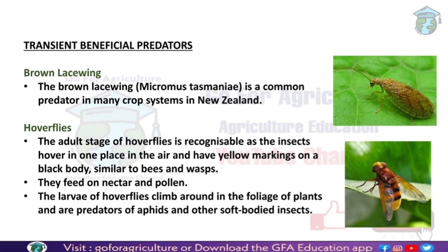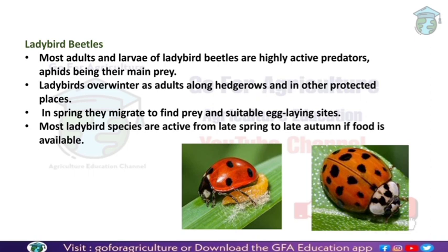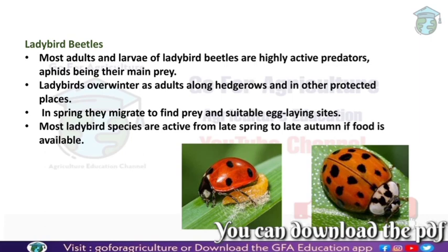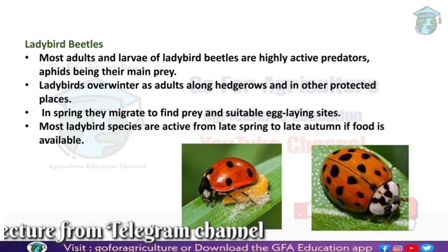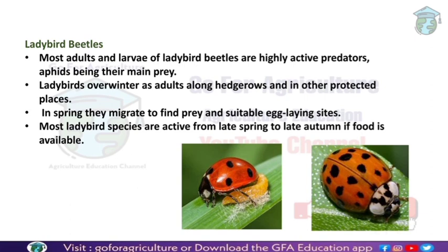Ladybird beetles are also transient predators. Both adults and larvae of ladybird beetles are highly active predators whose main prey are aphids. They overwinter as adults along hedgerows and in other protected places. In spring, they migrate to find prey and suitable egg-laying sites. Most ladybird species are active from late spring to late autumn when food is available.